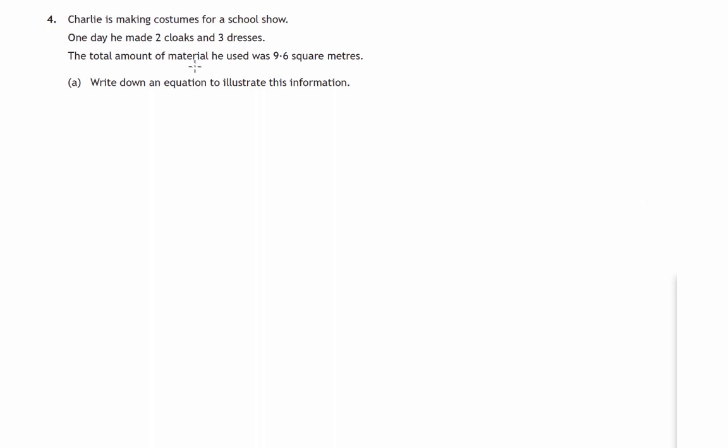This question says that Charlie is making costumes for a school show and he decides to make two cloaks, three dresses with different materials, and in total he uses 9.6 square meters of material. So we have to write down an equation to illustrate that information.